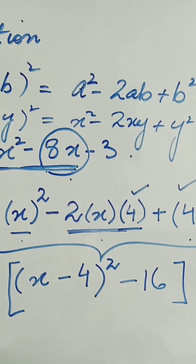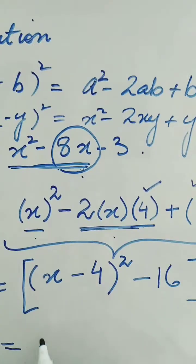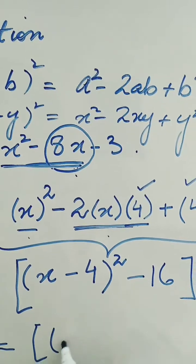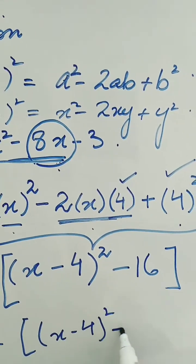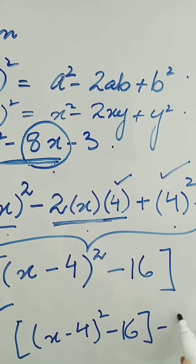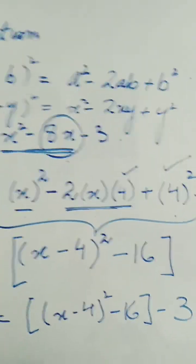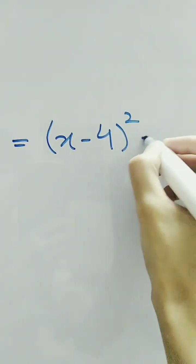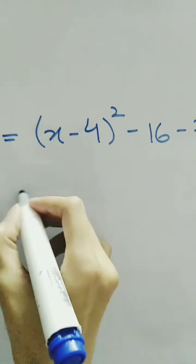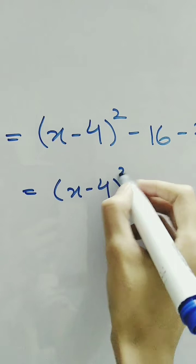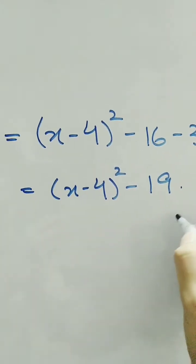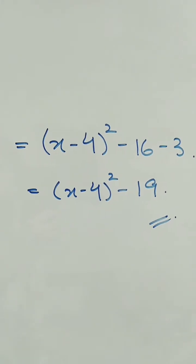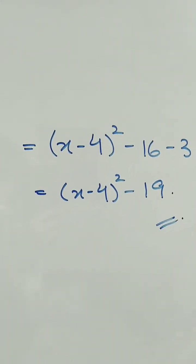So we can write it in this form. Now we substitute this value and we have x minus 4 whole square minus 16 minus 3. Opening the bracket, we have x minus 4 whole square minus 16 minus 3, which gives us x minus 4 whole square minus 19. This is our complete square form of the expression x squared minus 8x minus 3.